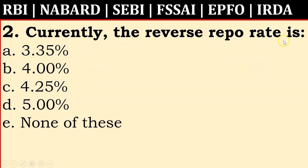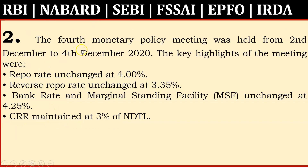Currently the reverse repo rate is 3.35 percent. Such data is also important and can be asked in the GA paper (Paper 1) as well as Paper 2. The fourth monetary policy meeting was held from 2nd December to 4th December. Key highlights: repo rate unchanged at 4 percent, reverse repo rate 3.35 percent, bank rate and MSF 4.25 percent, CRR 3 percent of NDTL.